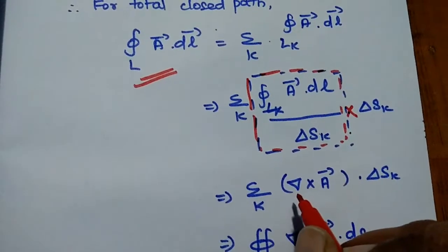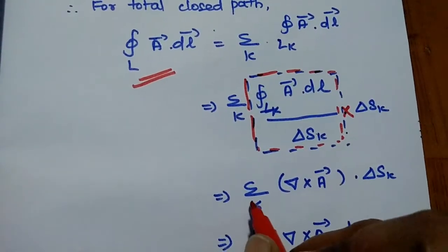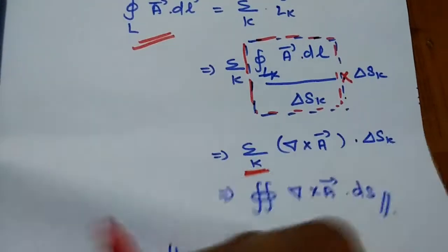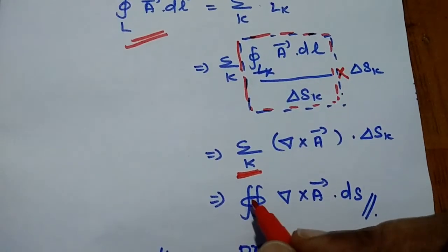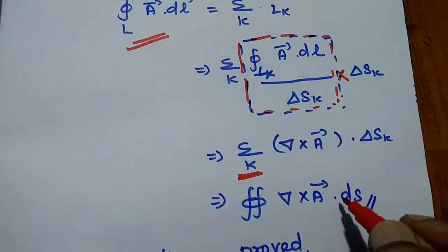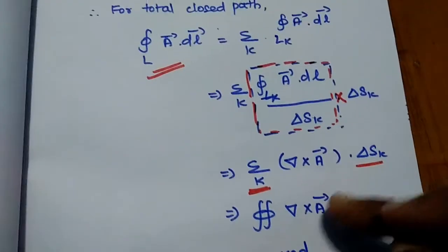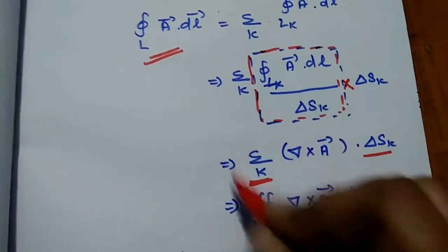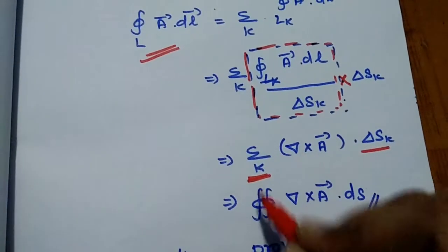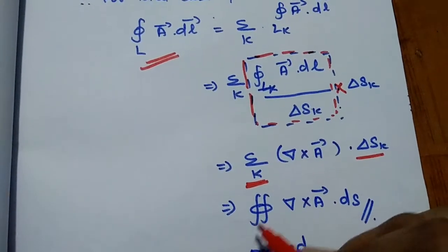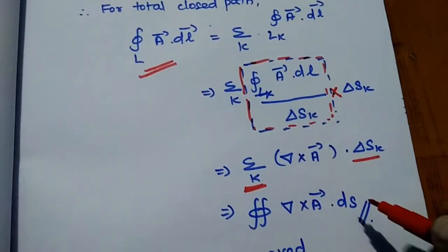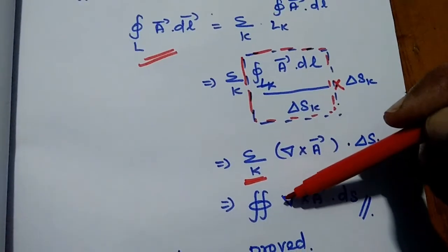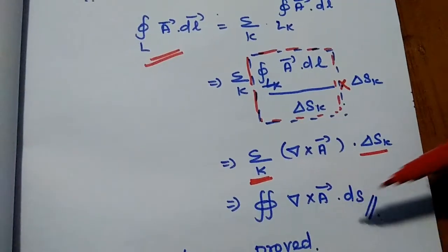The circulation per unit area is the curl of the field, so we can replace that term: del cross A vector. This gives summation K of del cross A vector times del SK. The summation over all the cells is equivalent to a surface integral, so this becomes surface integral of del cross A dot DS. We have thus proved that the line integral of A dot DL equals the surface integral of del cross A dot DS.